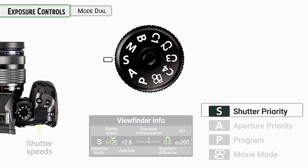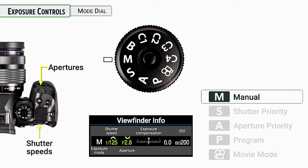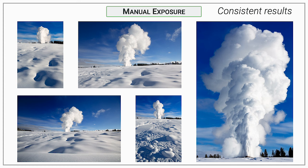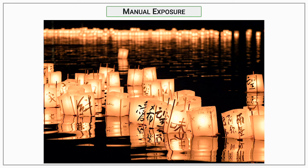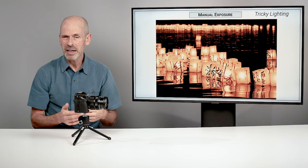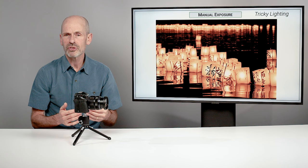Next up is full manual mode. This is one of my favorite modes because it gives you consistent results. If you're setting up a shot and shooting a lot of pictures over a short period under the same lighting conditions, you'll get consistent results because your shutter speed and aperture stay exactly the same. It's also good under tricky lighting — lots of dark areas, bright lights, or very light-toned subject material that might throw off your meter. You might want to do a few test exposures and set things manually.